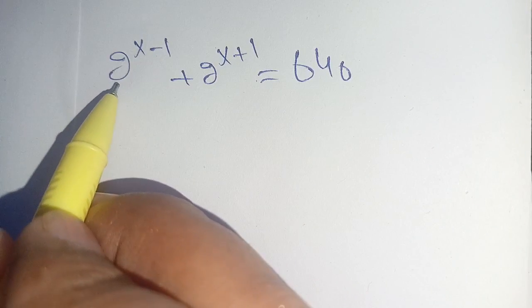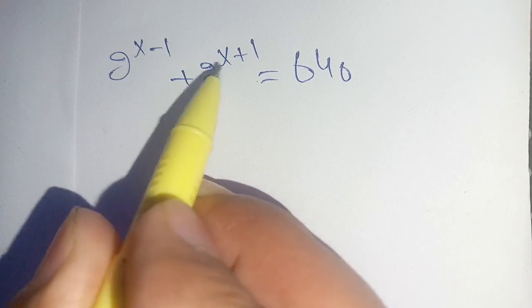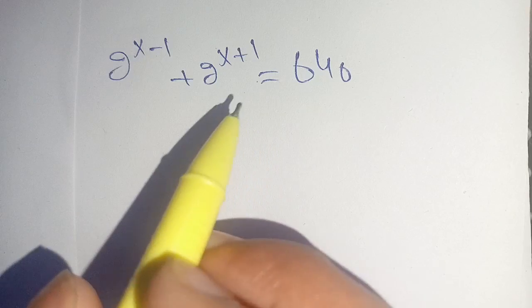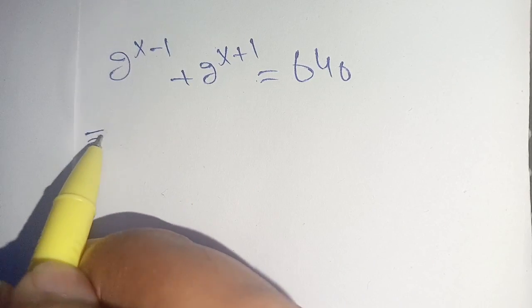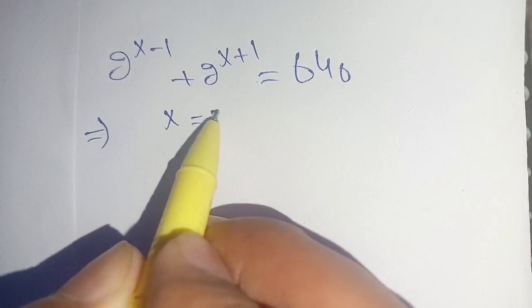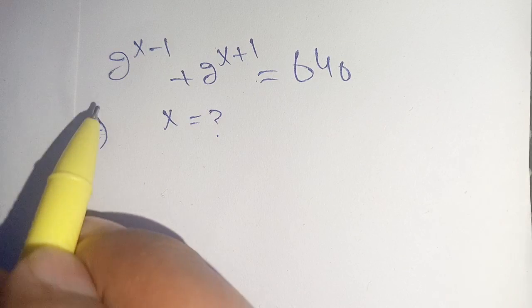Hello everyone. How to simplify 2 raised to power x minus 1 plus 2 raised to power x plus 1 is equal to 640. Let us solve this and we have to find the value of x which satisfies this exponential equation.